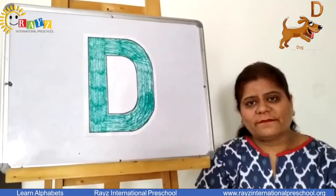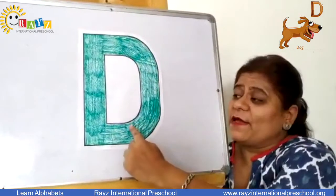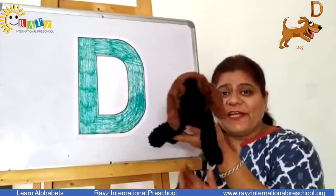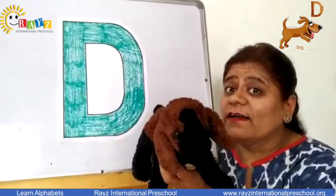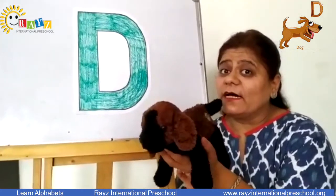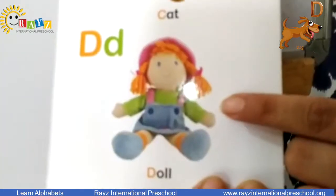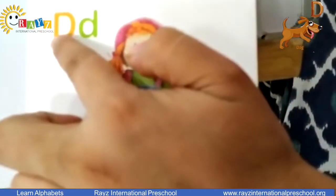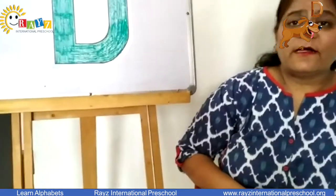We are going to learn about letter D. Which letter is this? Letter D. D is for dog. What sound does the letter D make? D, D, D. Dog. D, D, D. Doll. Which letter is this? Letter D. D ki sound kiise aati hai? D, D. Doll. Small dog.